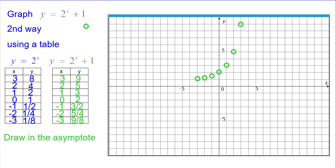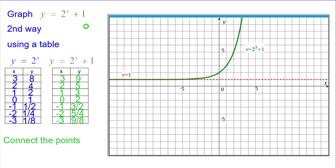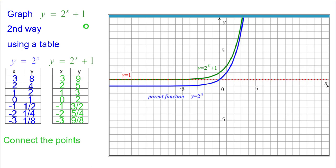We should draw on the asymptote, which is at y equals 1. And then we can go ahead and connect the points. And we can compare that to the parent function, y equals 2 to the x.